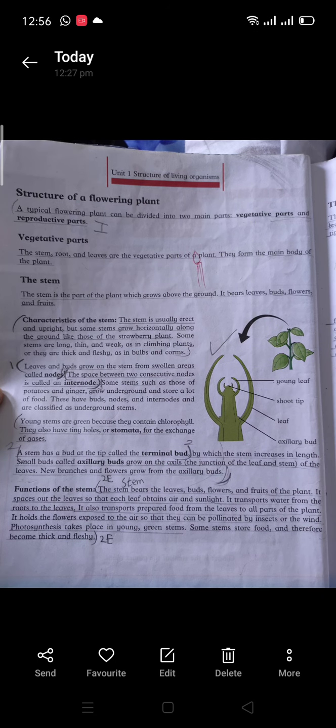The leaves grow with spaces between them. So Almighty is perfect; he makes everything perfect. It also transports prepared food from the leaves to all parts of the plant because there is xylem and phloem. Phloem transports food all over the plant body. Alhamdulillah, Almighty has made them. It holds the flowers exposed to the air so that they can be pollinated by insects or the wind. Pollination is very necessary for a plant because this is also reproduction.